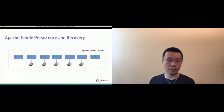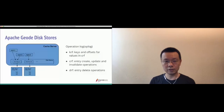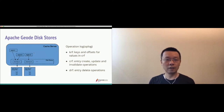Let's zoom into the cache server to see what's happening in terms of persistence and recovery. In the cache server, there are a number of regions and a number of disk stores. Regions can be replicated or partitioned — essentially a distributed hash table with keys and values. Some regions can have a dedicated disk store, or some regions can share the same disk store.